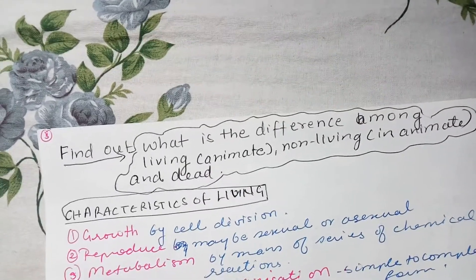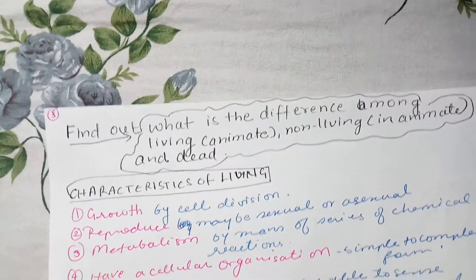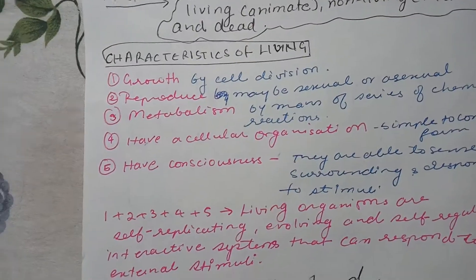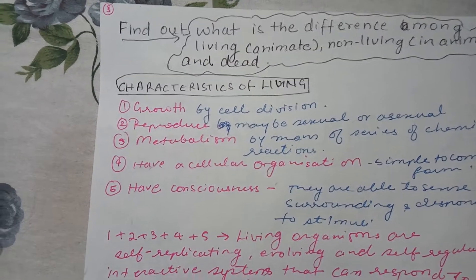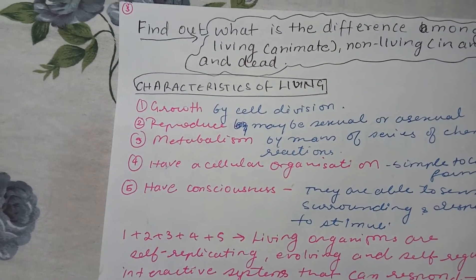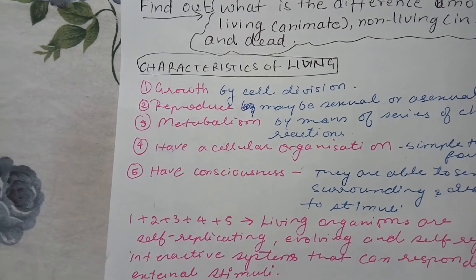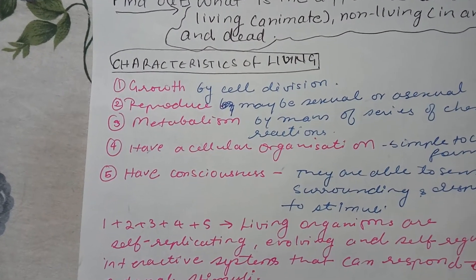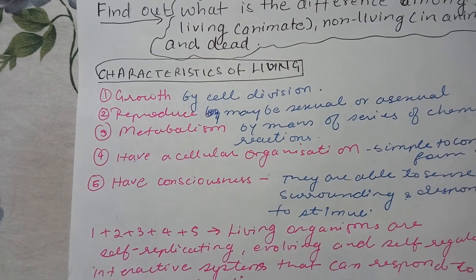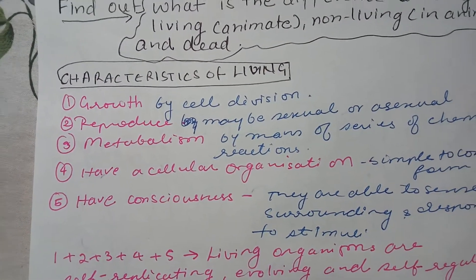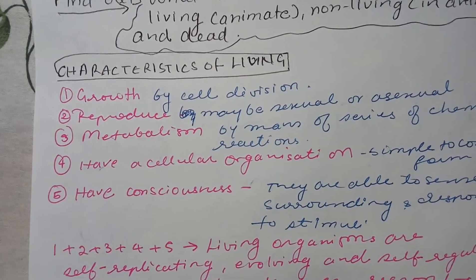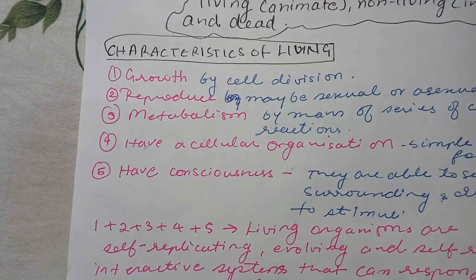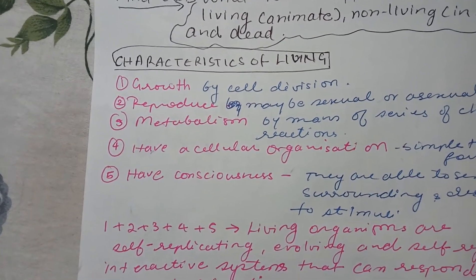Let's discuss the characteristics of living beings. A very important characteristic is growth. Growth means increase in size and mass — that is, increase in the number of cells. Whenever there is growth, it occurs by cell division.